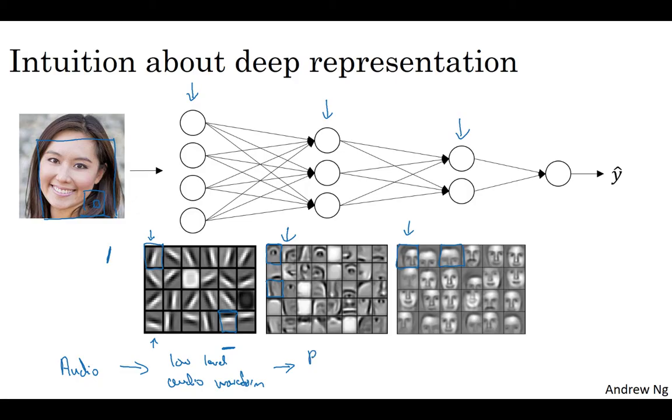In linguistics, they're called phonemes. But for example, in the word cat, the kuh is a phoneme, the ah is a phoneme, the tuh is another phoneme, but it learns to find maybe the basic units of sound. And then composing that together, maybe you learn to recognize words in the audio, and then maybe you can compose those together in order to recognize entire phrases or sentences.